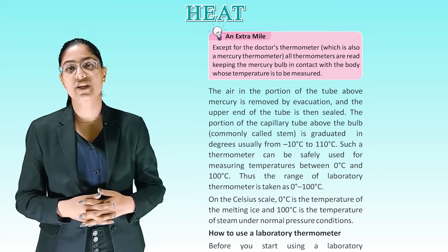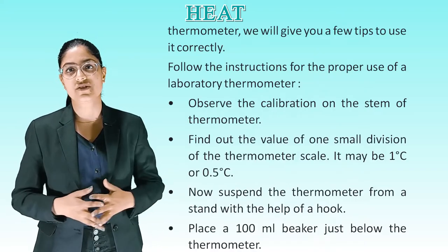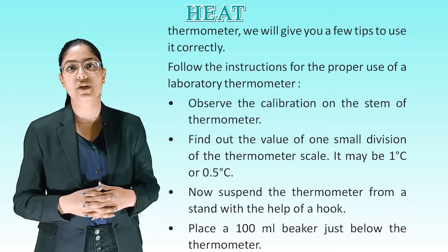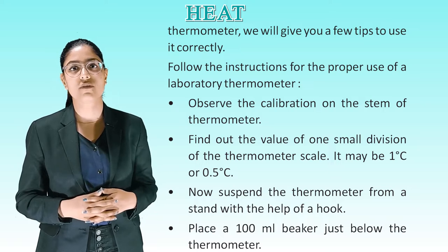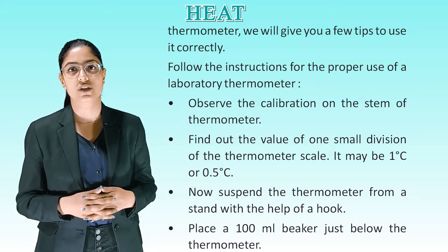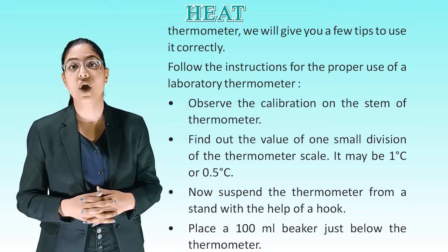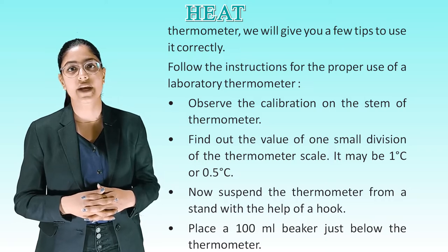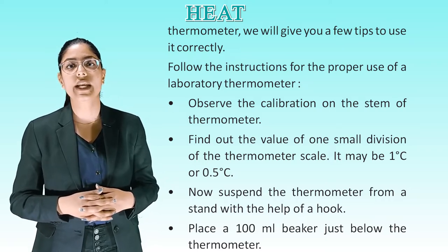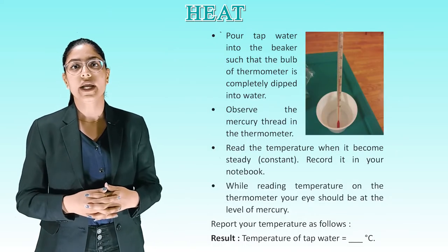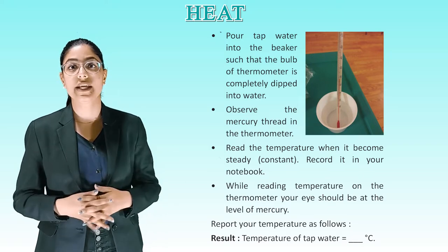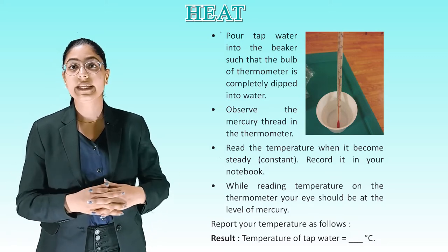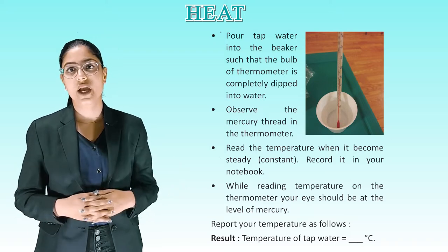How to use a laboratory thermometer. Before using it, observe the calibration on the stem and find out the value of one small division — it may be 1°C or 0.5°C. Suspend the thermometer from a stand using a hook. Place a 100 ml beaker just below it. Pour tap water into the beaker so the bulb is completely dipped. Observe the mercury thread, read the temperature when it becomes steady and constant, and record it in your notebook.